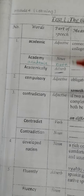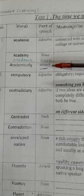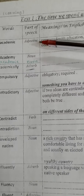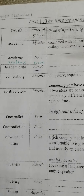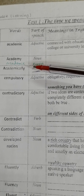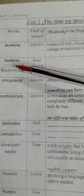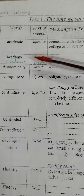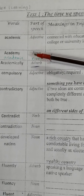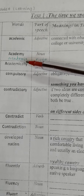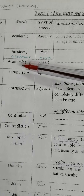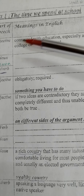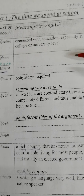Let's begin. 'Academic' is an adjective, and there's also 'academic' as a noun. You should know it as both adjective and noun. When I say adjective, it means something academic. 'Academic' means connected with education — especially at college or university level.